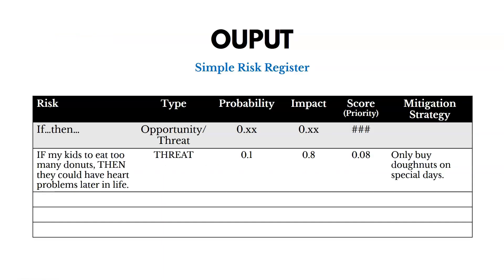The key output of Identify Risks is the risk register. It includes the risk, the type of risk — whether it's an opportunity or a threat — the probability (likelihood of it impacting us), the impact (how bad it would be if it does occur), a score, and potentially a mitigation strategy.